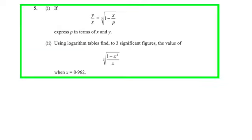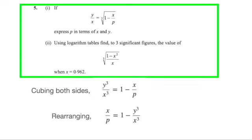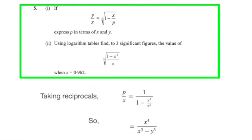In the first part of question 5, we need to express p as a subject. The first step would be to cube both sides to get rid of the cube root. We then bring x over p to one side, before taking the reciprocal. Doing so allows us to flip p up from a denominator position. And after some rearranging, we see that p equals x power 4 divided by x cubed minus y cubed.